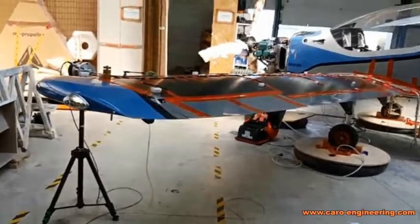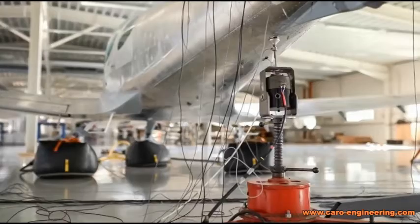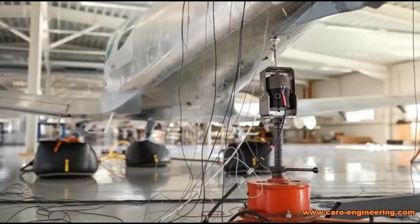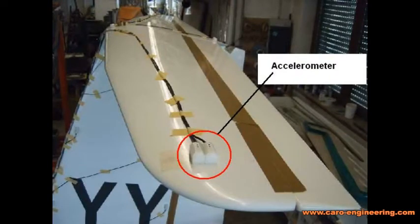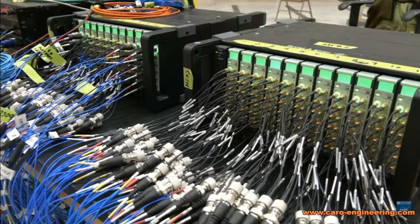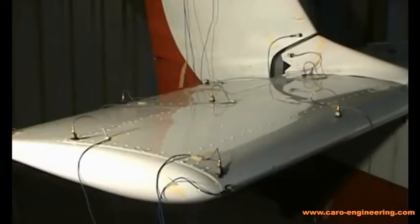During this test, all the frequencies are determined at which the airframe will vibrate and resonate. This is done by attaching exciters on various parts of the structure that shake the components at different frequencies. Accelerometers attached all over the airframe measure the responses. That means there are a lot of wires to run from the airframe to the recording equipment. The goal is to find the frequencies at which the amplitudes of the airframe parts are the highest.